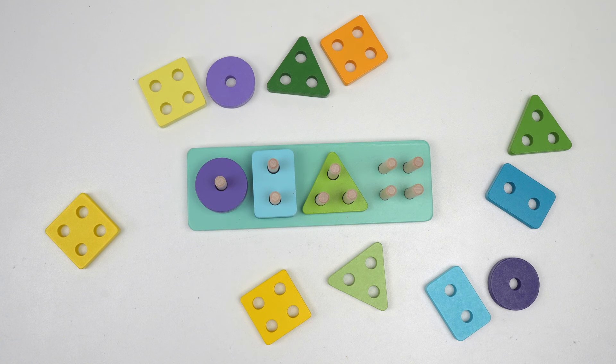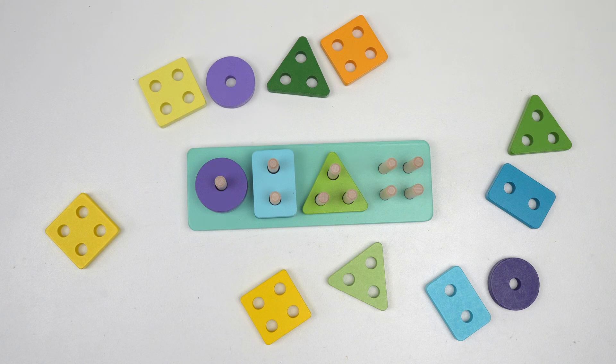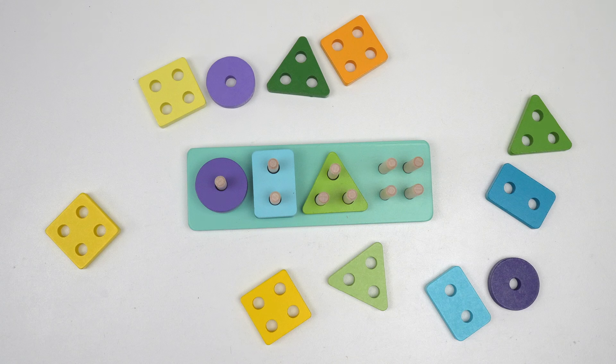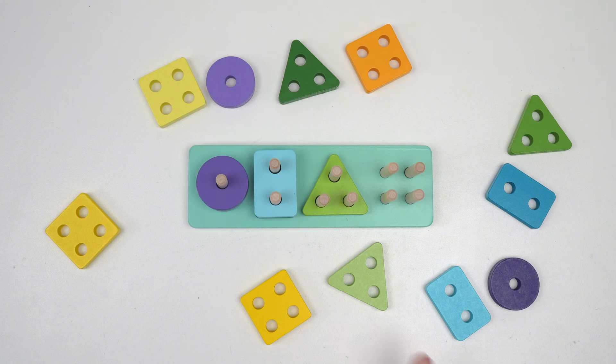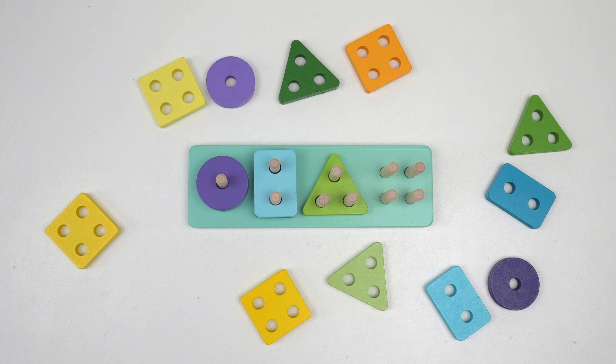Let's find one more triangle before we do our next shape. Can you find the darkest green triangle? If this one is the lightest green, which one is the darkest green?